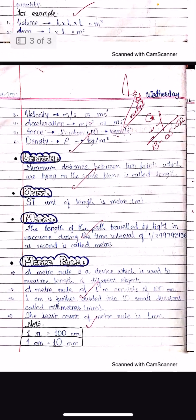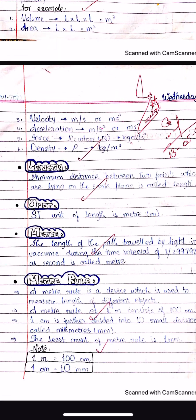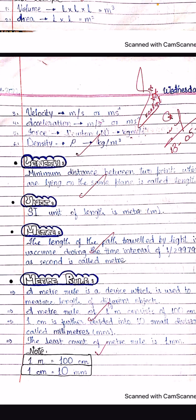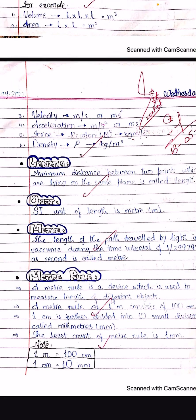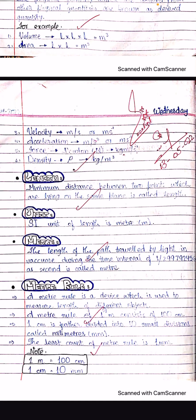Now two basic things. Length means the distance between any two points — the minimum distance between two points is called length.